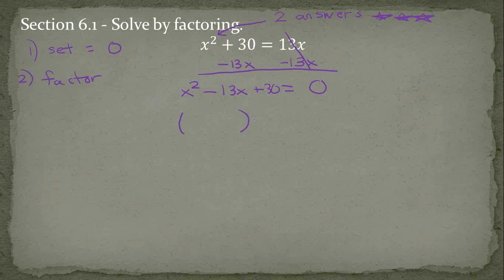To factor three terms, we can go ahead and fill in the x times x, because that's how you get x squared. When you distribute x times x is x squared. Then we have to find numbers that multiply to the third one, and add to the middle.